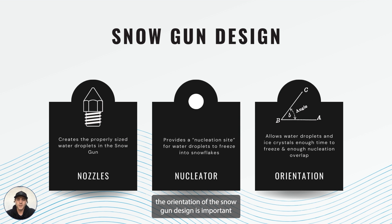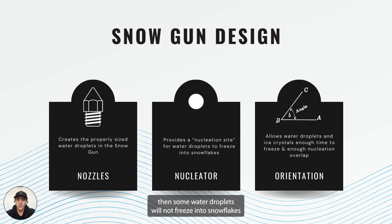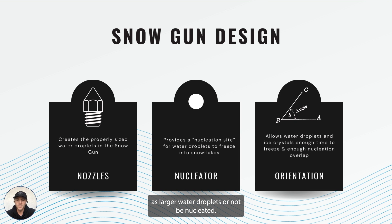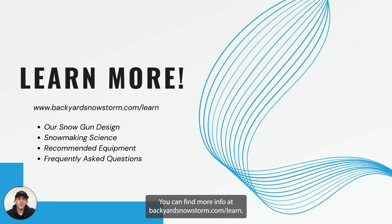And lastly, the orientation of the snow gun design is important for snow output. If the nozzles and the nucleator aren't oriented in the proper way, then some water droplets will not freeze into snowflakes and they can fall as larger water droplets or not be nucleated. If that happens, you'll have a mixture of water and ice, which can affect snow output as well.